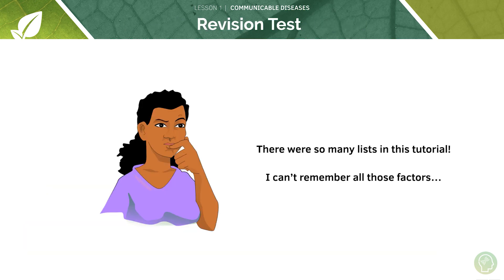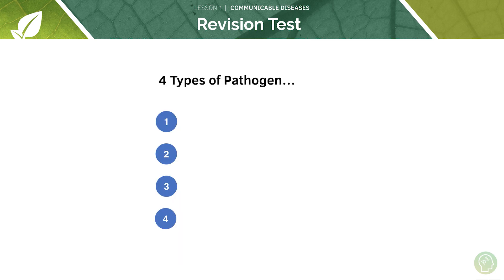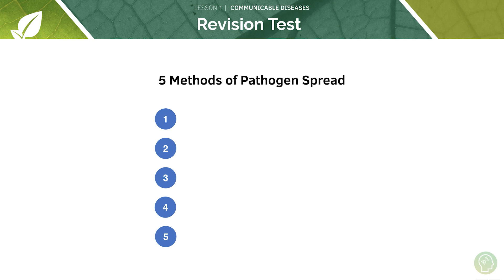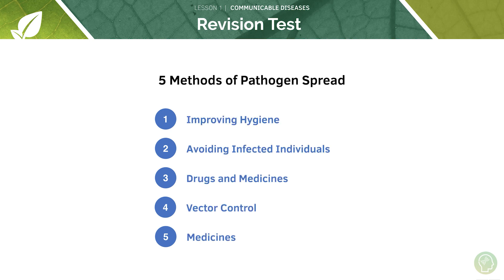That's all for today. To recap: your four types of pathogen are bacteria, viruses, fungi and protists. Your three methods of pathogen spread are water, direct contact and air droplets. And your five methods of reducing pathogen spread are improving hygiene, avoiding infected individuals, drugs and medicines, vector control and vaccination.